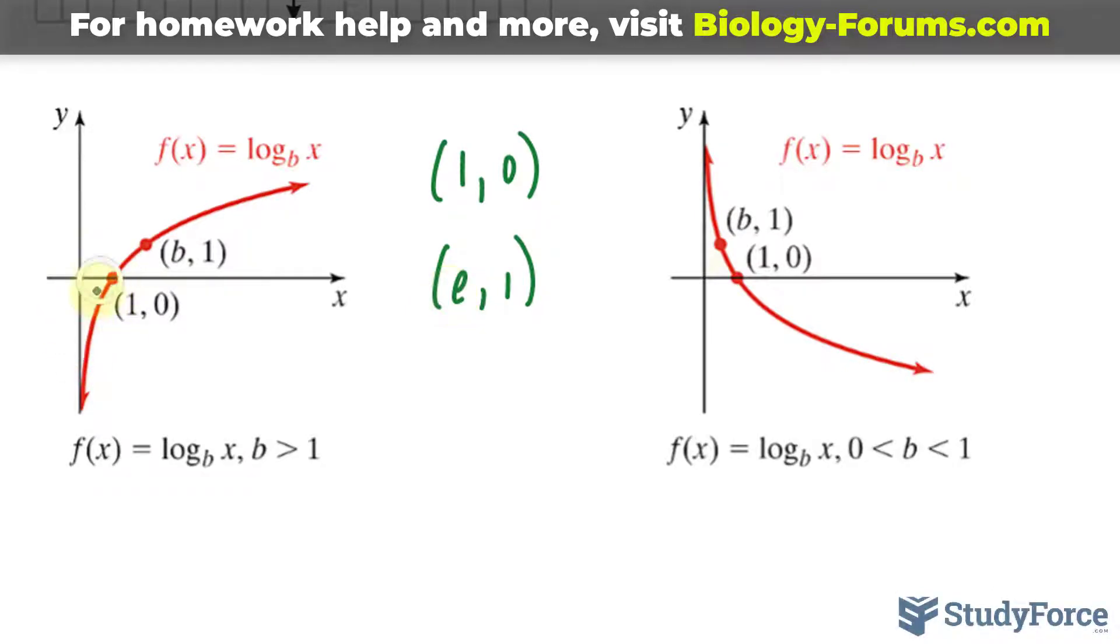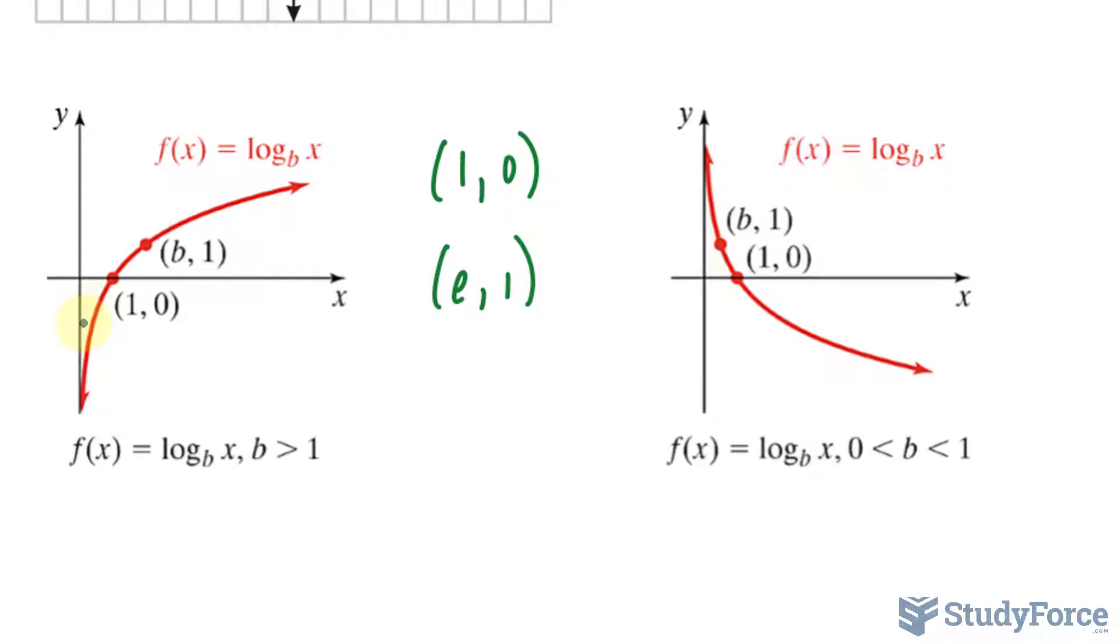And what's not shown here is a third point. You always want to use three reference points as you do a transformation from a starting graph. What would be another point along this generic curve? Well, in our previous video, we learned that you'll have a point at 1 over the base, which is e, and negative 1. So that's always the case. You can always use these as three reference points to start off any log graph. That is, of course, if b is greater than 1, which it is here.